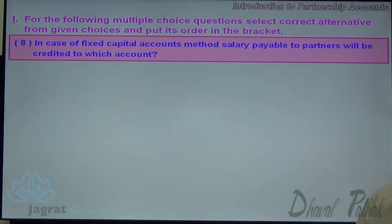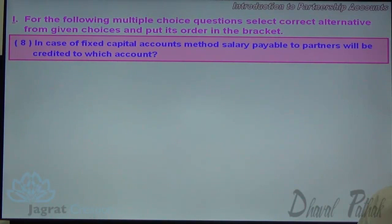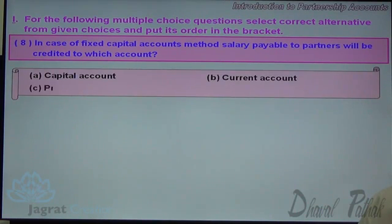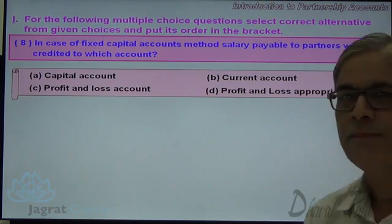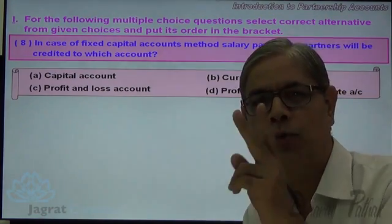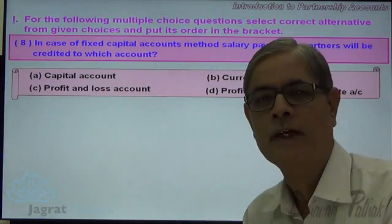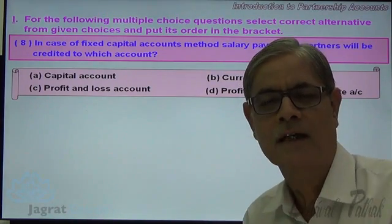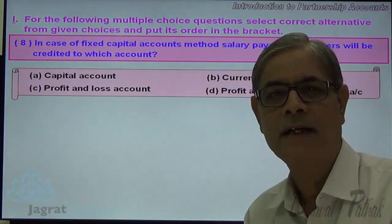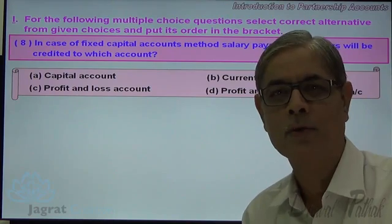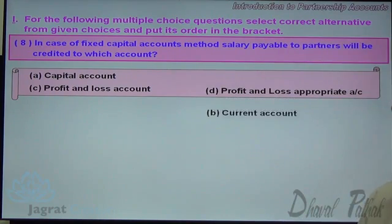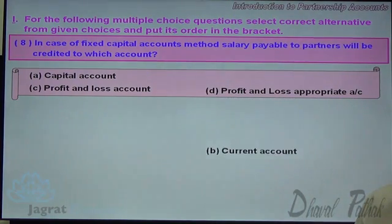Next. In case of fixed capital accounts, salary payable to a partner will be credited to which account? Under the fixed capital account method there are two capital accounts for each partner — one fixed and one current. Salary and interest on capital are recorded in the current account. So the correct answer is B — current account.